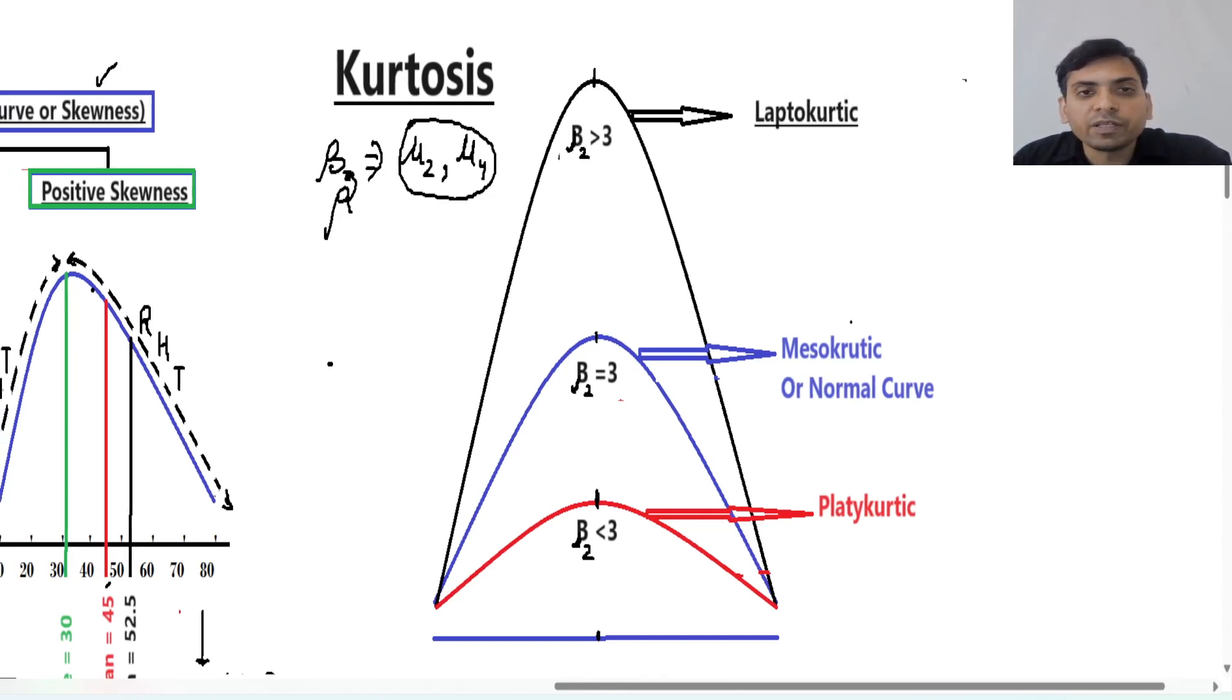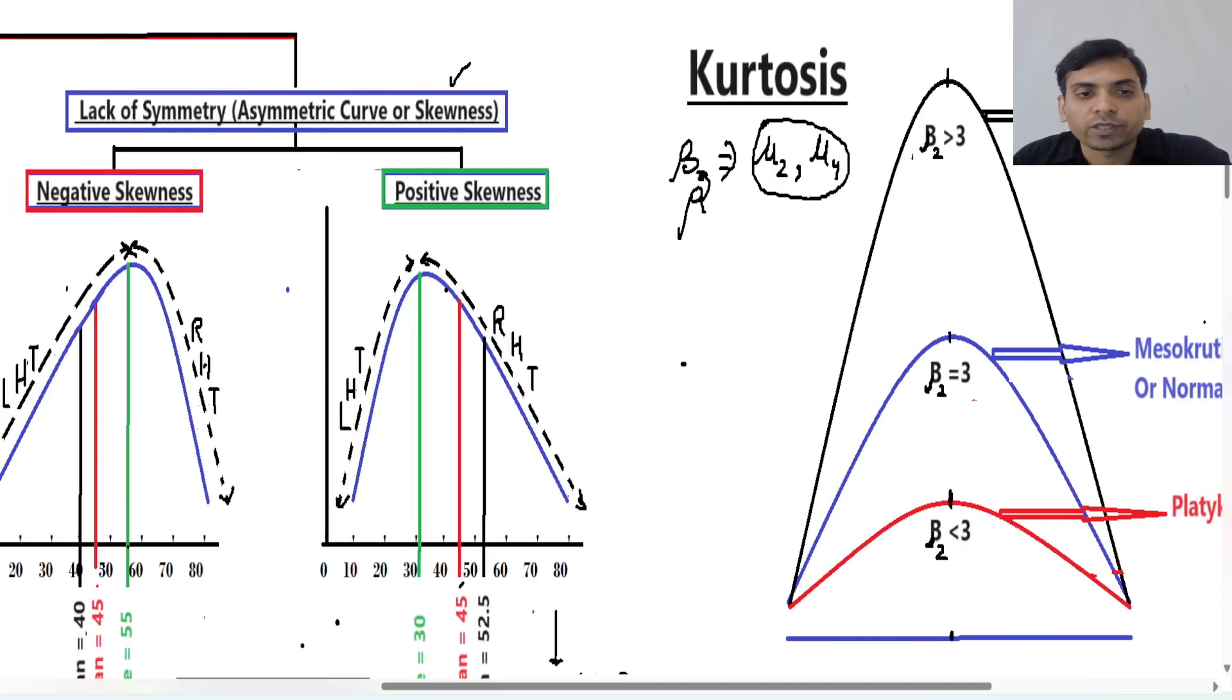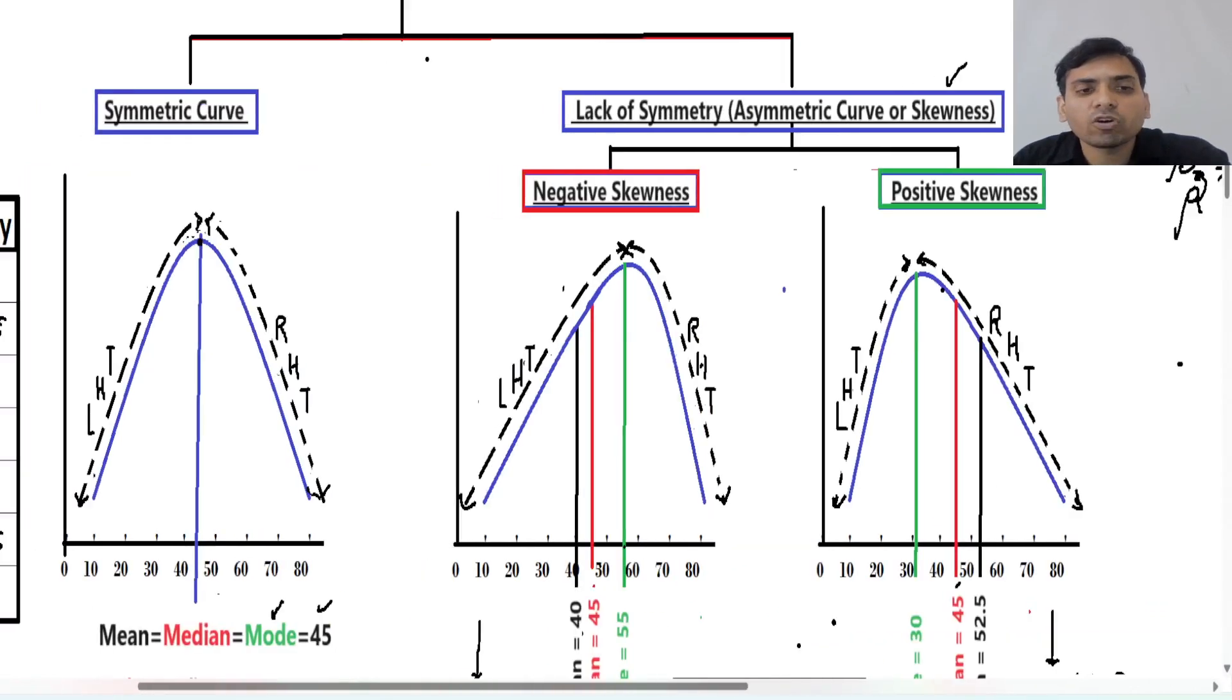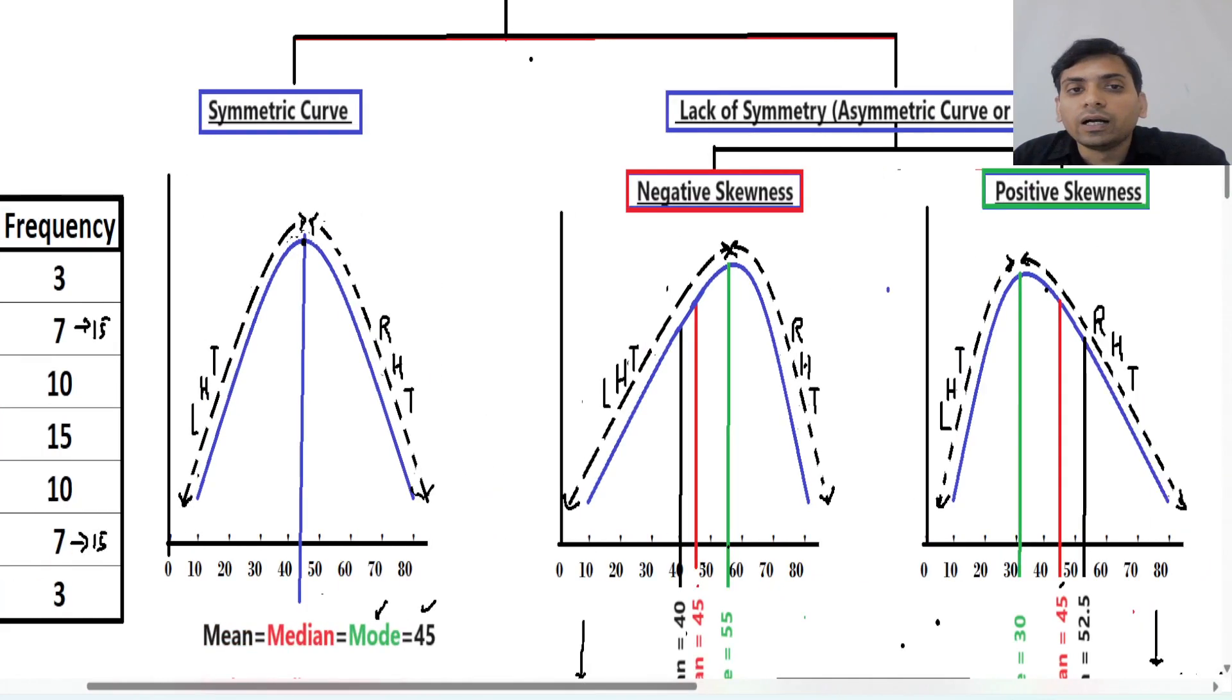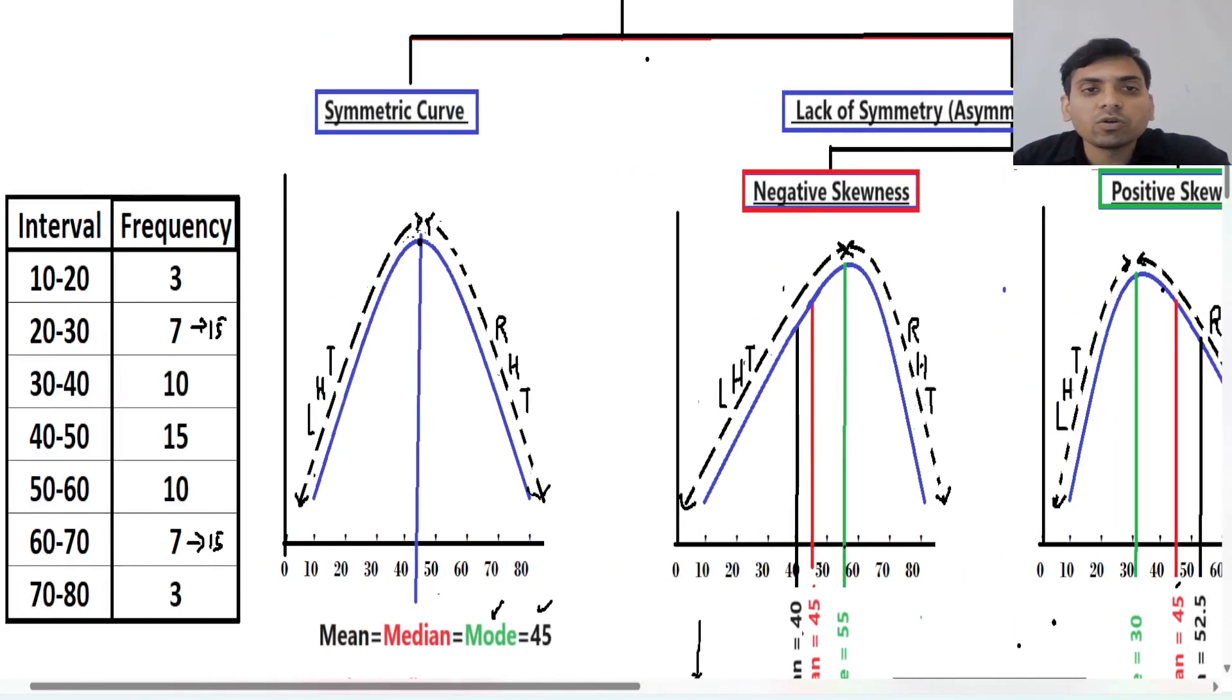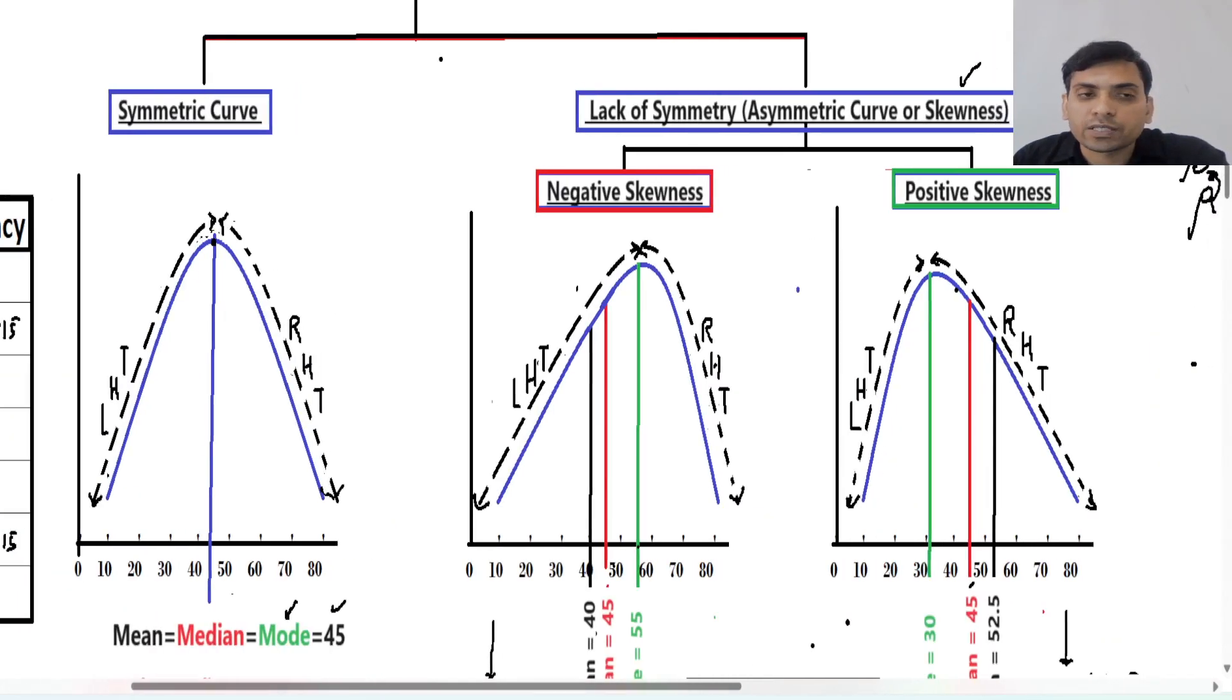And the difference between kurtosis and skewness is what? In case of skewness, in my last lecture I taught, we are shifting this location of highest frequency towards right or left, just like this 15 towards left or towards right. This creates skewness.